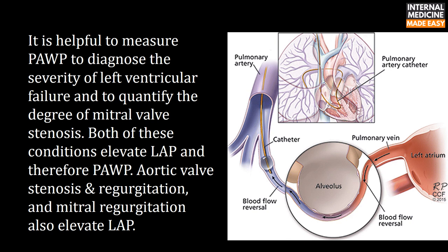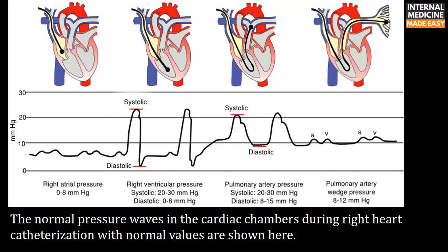Both left ventricular failure and mitral valve stenosis elevate left atrial pressure and therefore pulmonary artery wedge pressure. Aortic valve stenosis and regurgitation, and mitral regurgitation, also elevate left atrial pressure.